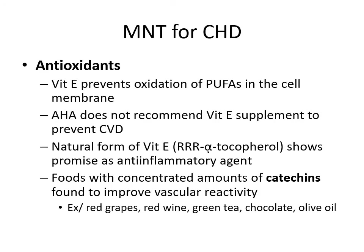Looking at antioxidants: vitamin E prevents the oxidation of PUFAs in the cell membrane, although the American Heart Association does not recommend vitamin E supplementation to prevent cardiovascular disease. The natural form of vitamin E shows promise as an anti-inflammatory agent. Foods with concentrated amounts of catechins have been found to improve vascular reactivity — these include red grapes, red wine, green tea, chocolate, and olive oil.